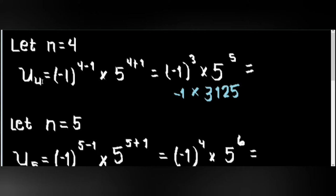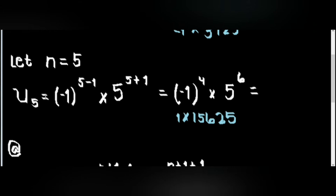Let n equal to 4: u sub 4 is equal to negative 1 raised to 4 minus 1 times 5 raised to 5, which is negative 1 times 3,125. Multiplying them, we have negative 3,125. Let n equal to 5: u sub 5 equals negative 1 raised to 5 minus 1 times 5 raised to 5 plus 1. Solving them, we have 1 times 15,625. Therefore, our answer is 15,625.